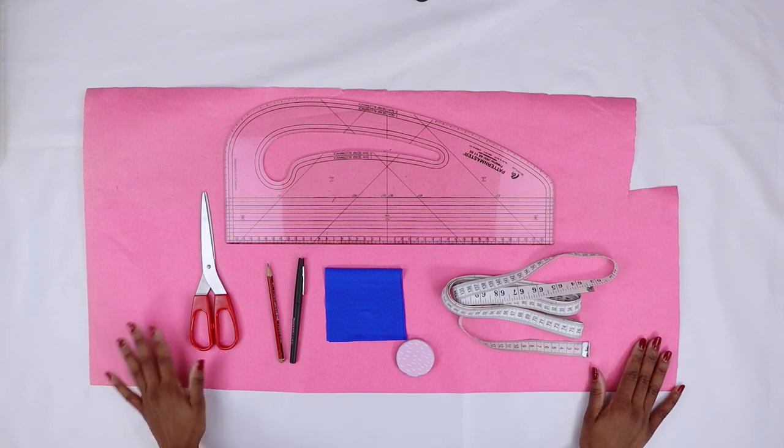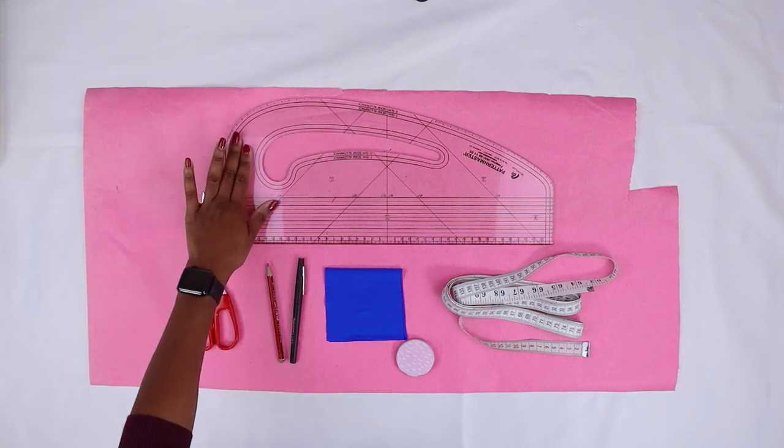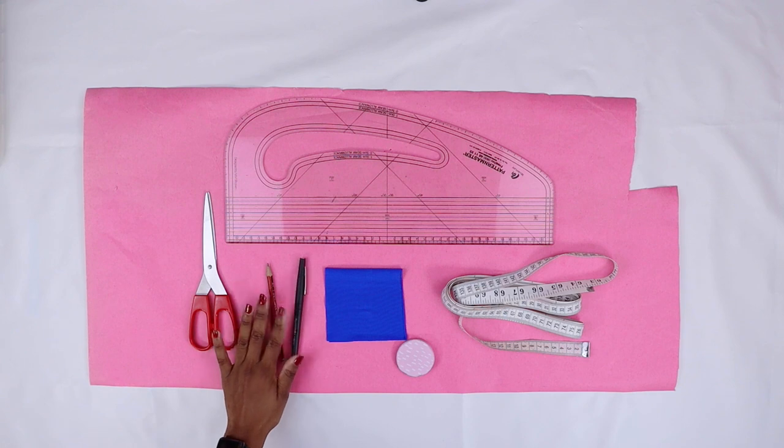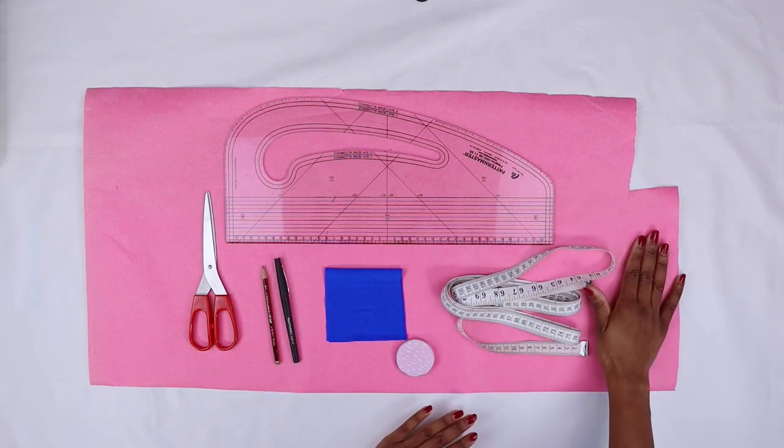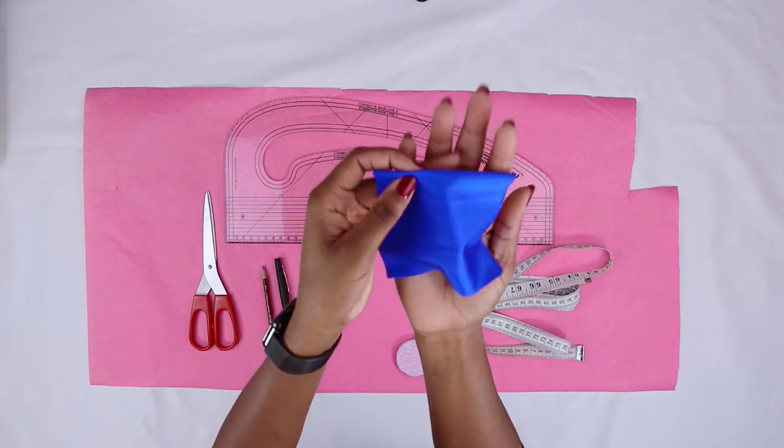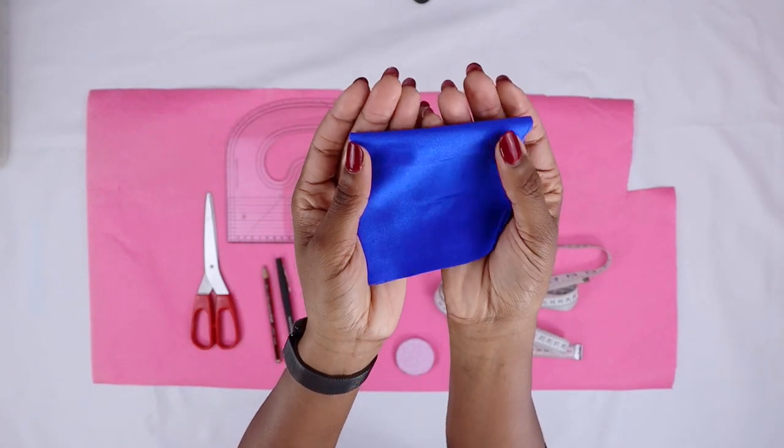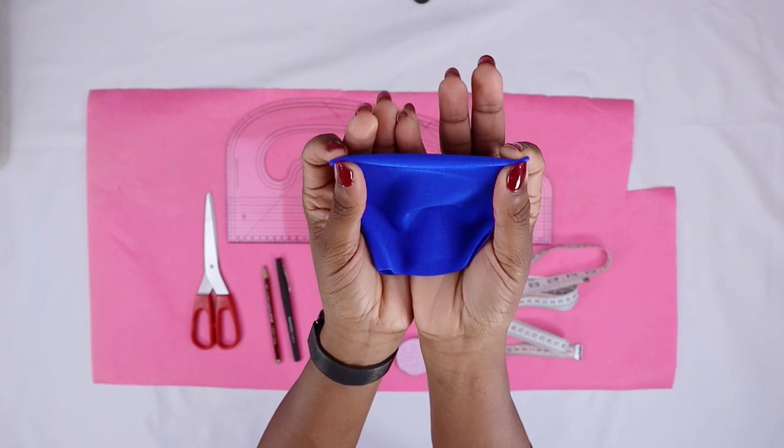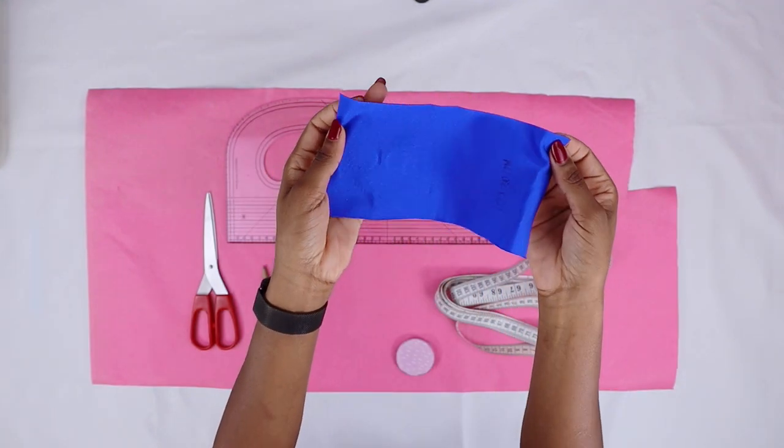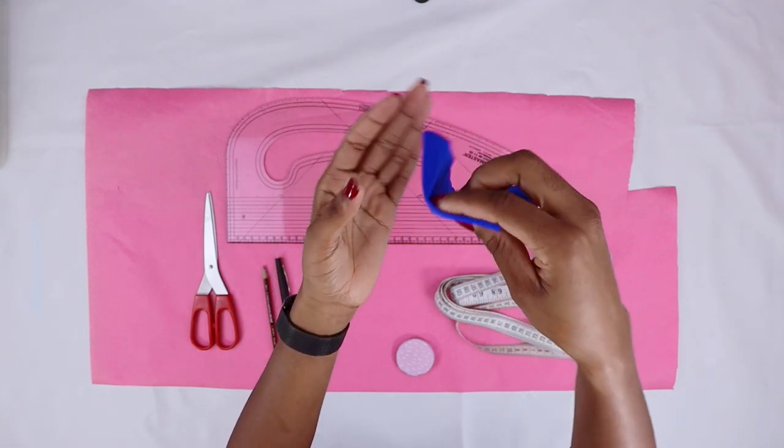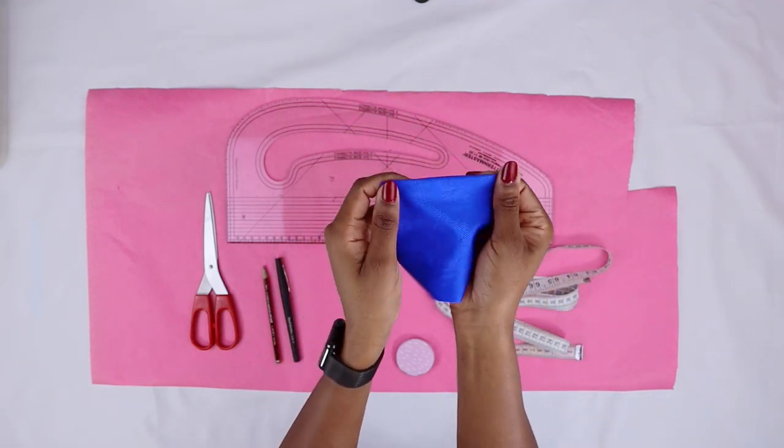For this tutorial you will need your ruler, scissors, pen and marker, your measuring tape, paper, and you also need a piece of stretch fabric. Make sure the width has to be 10 centimeters long, and make sure it's on fold so the width is 10 centimeters long.